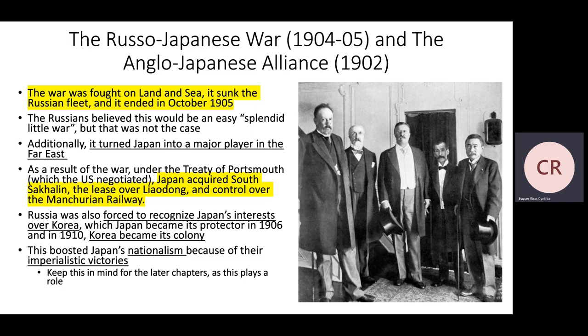As a result of the war, under the Treaty of Portsmouth — negotiated by the U.S. — Japan acquired South Sakhalin, the lease over Liaodong, and control over the Manchurian Railway. Russia was also forced to recognize Japan's interests in Korea, which became Japan's protectorate in 1906 and a full colony in 1910. This boosted Japanese nationalism because of their imperialistic victories. Japan had not only defeated China, but had now taken down one of the major powers of the time, leaving Japan feeling very confident.